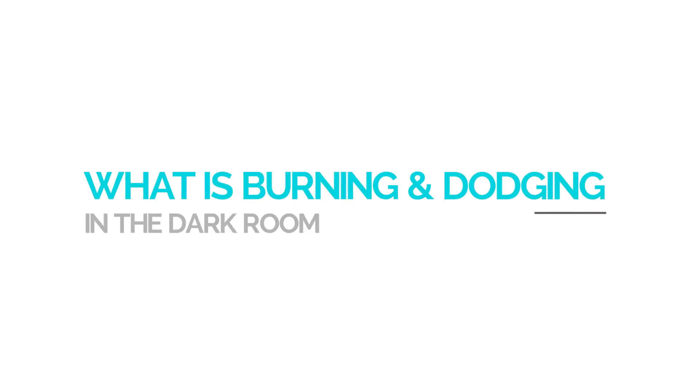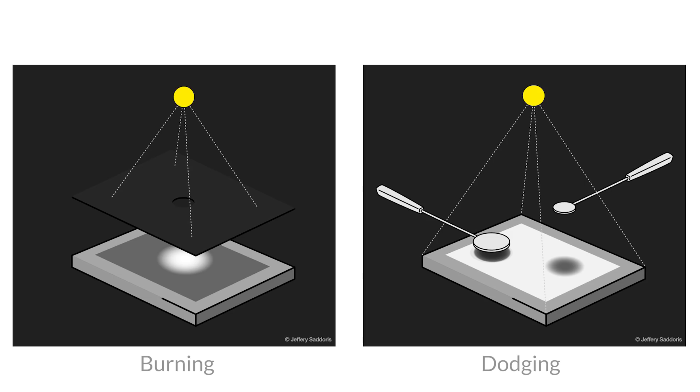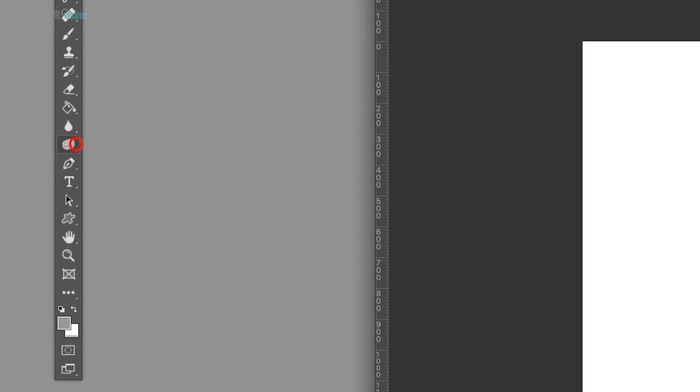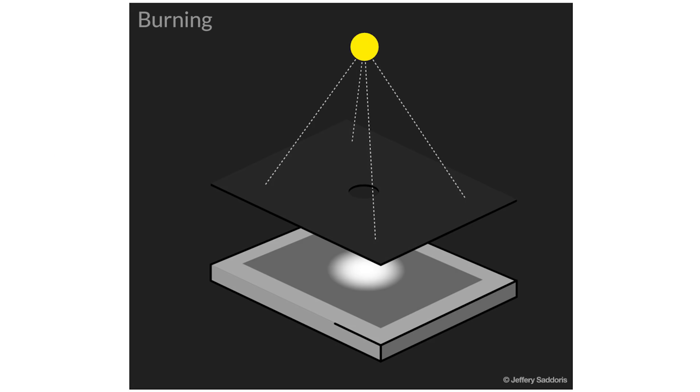The term burning and dodging refers to the darkroom technique used in the printing process for controlling the exposure of a selected area of the image. Nowadays we use a very similar technique in Photoshop but with far greater precision. Burning refers to the process used to darken certain areas of the image when printing from negatives. This was done by allowing more light to reach a particular area — for example by holding a sheet of cardboard with a hole in it over the area of the print to let light through and darken that particular spot.